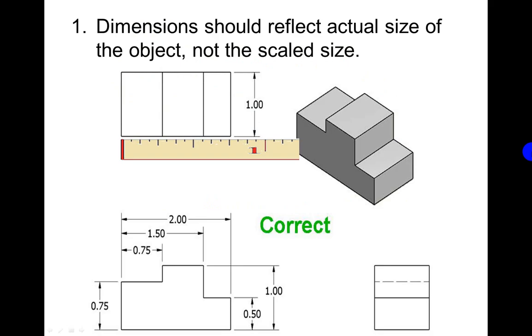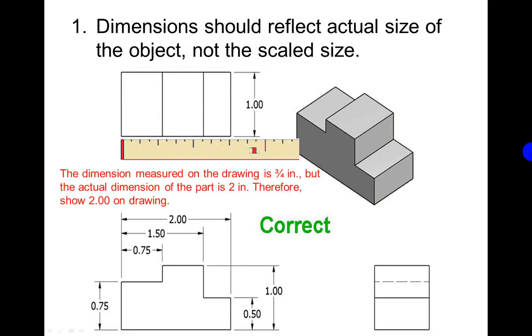Dimensions should reflect the actual size of the object, not the scaled size. Once you have put the drawings on the sheet, it's a scaled size. The dimensions measured on the drawing sheet is three fourths of an inch, but the actual dimension of the part is two inches, therefore you show the two inches on the drawing sheet.